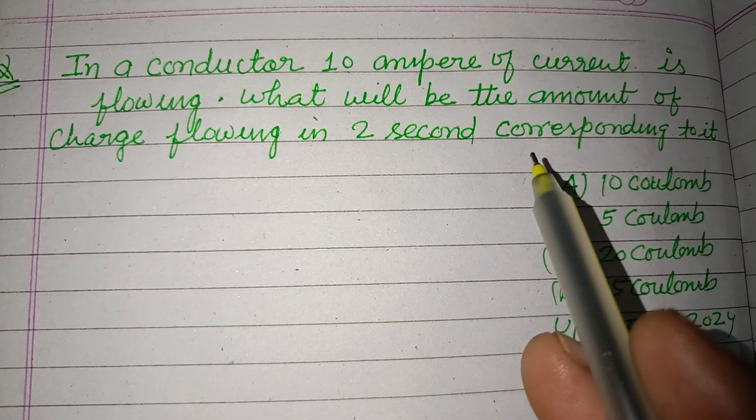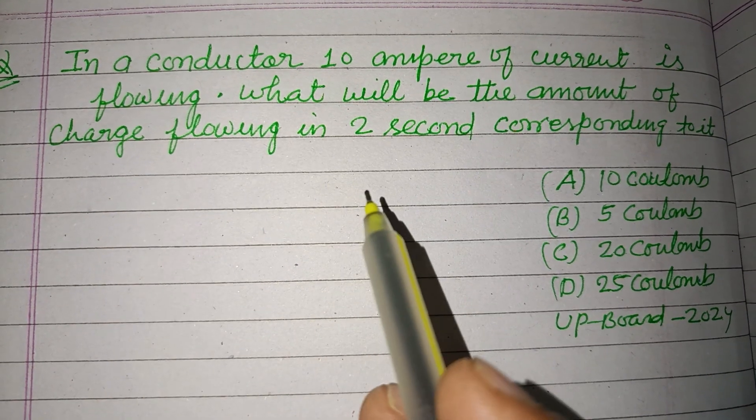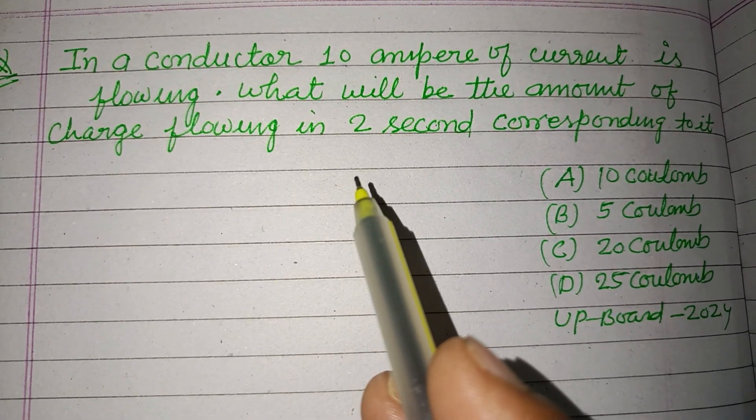In a conductor, 10 ampere of current is flowing. What will be the amount of charge flowing in 2 seconds corresponding to it?